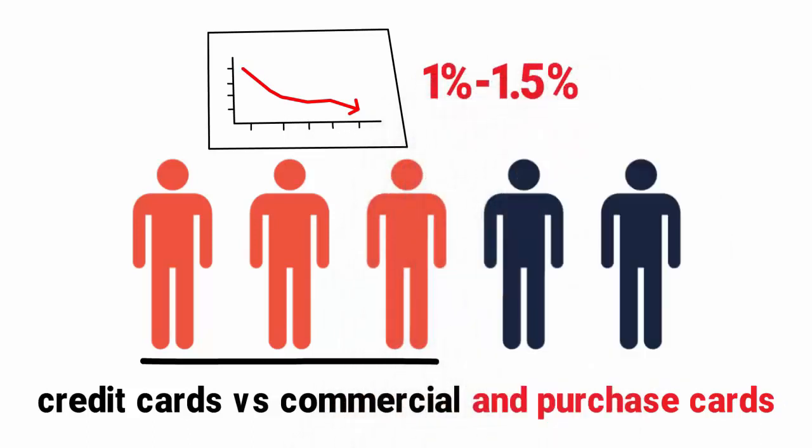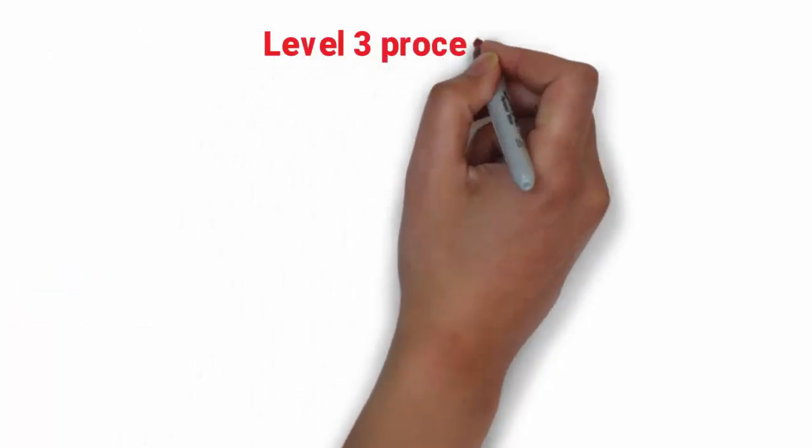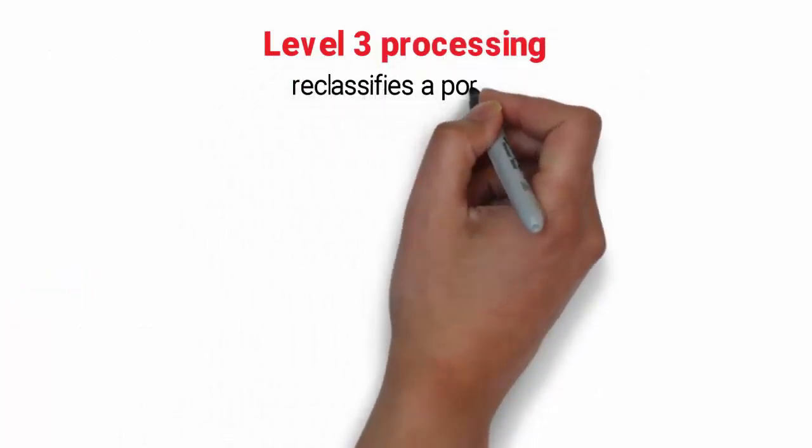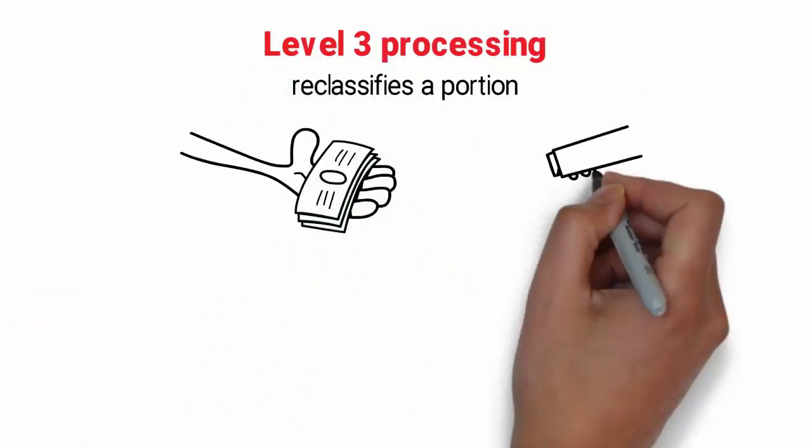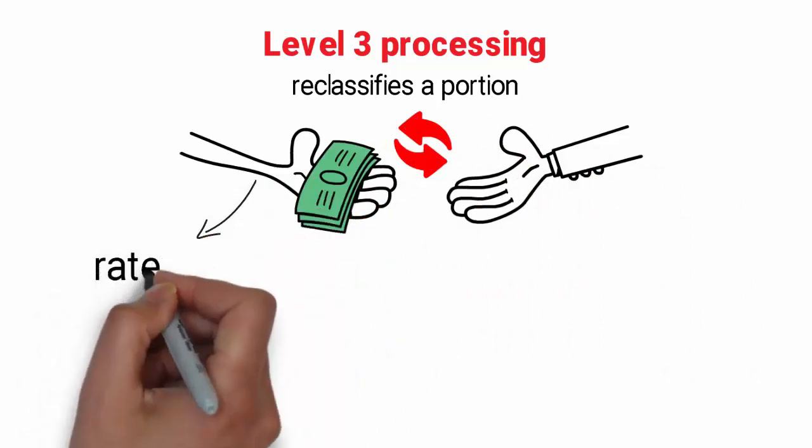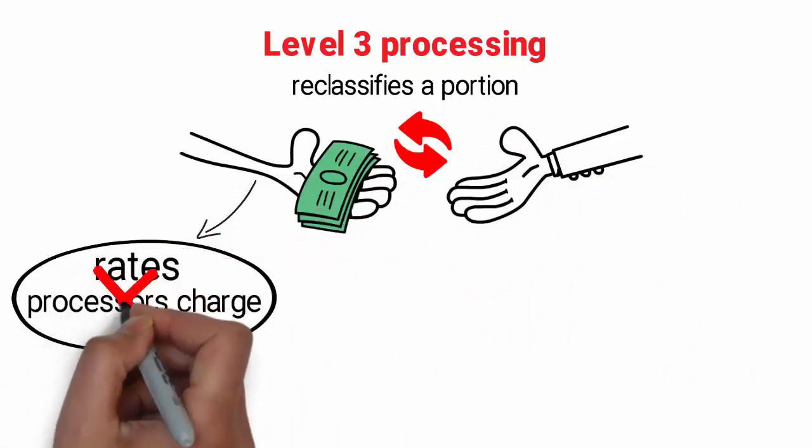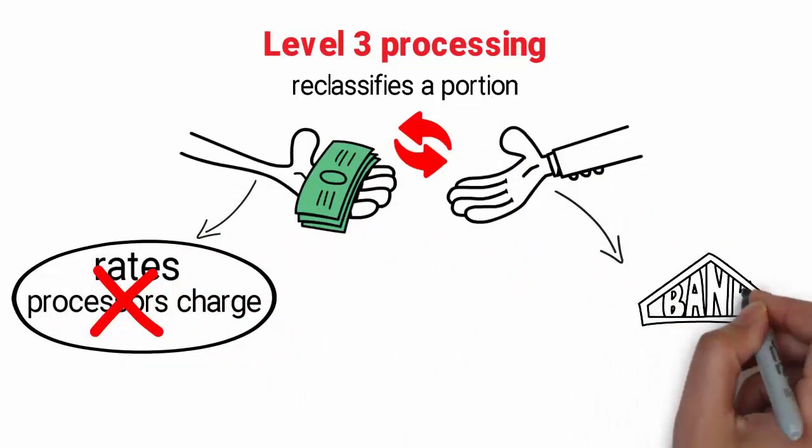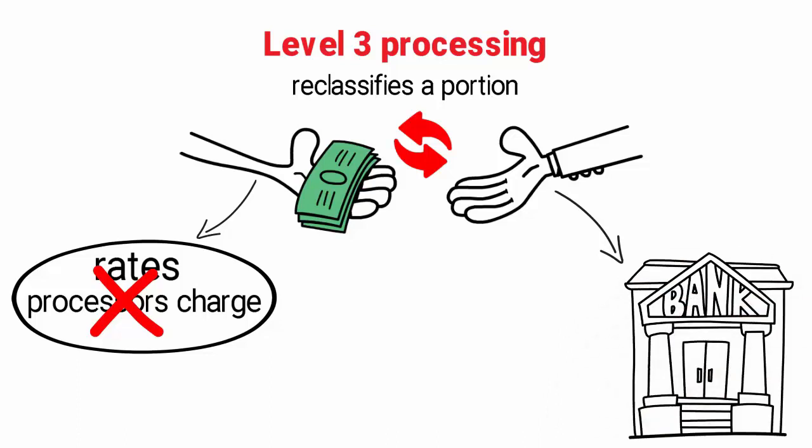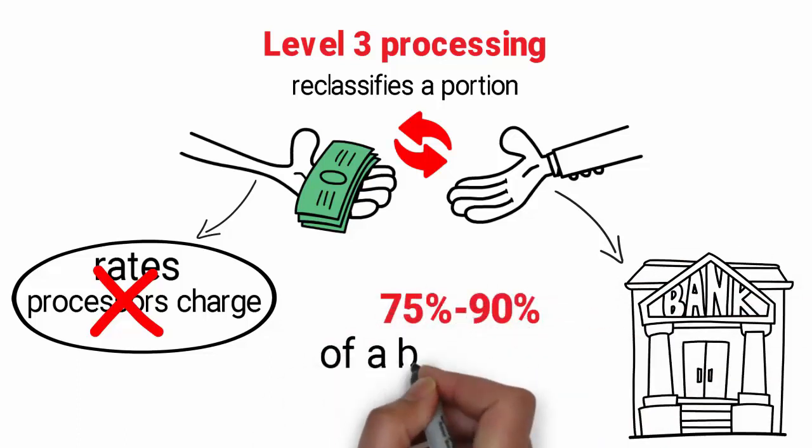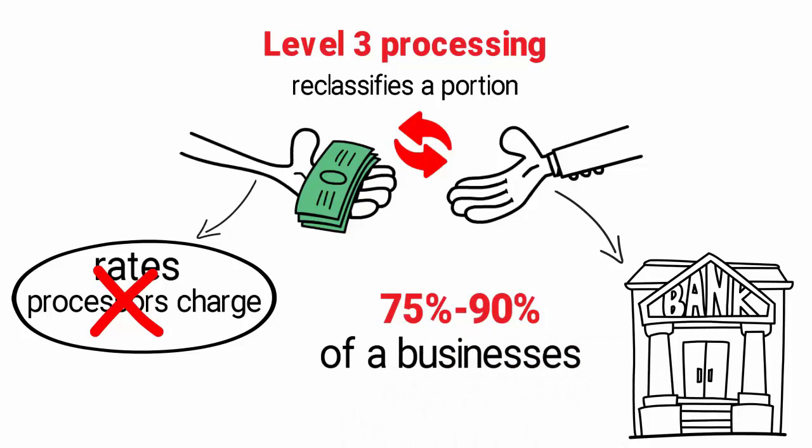One reason this is often overlooked is that Level 3 processing reclassifies a portion of the interchange fees businesses pay to accept credit cards that is not related to the rates processors charge. Interchange goes back to the bank that issued the credit card and amounts to 75% to 90% of a business's total expense for accepting credit cards.